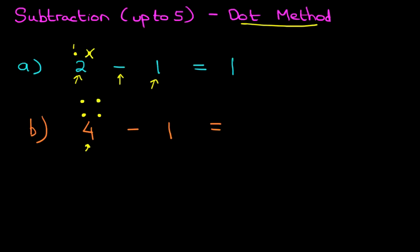Using the dot method, what we do first is have a look at the number on the left. We have got 4, so let's draw 4 dots: 1, 2, 3, and 4. So those are 4 dots to represent the number 4.